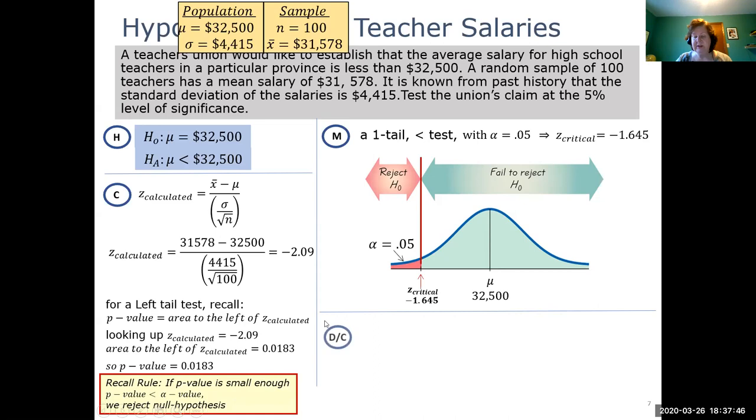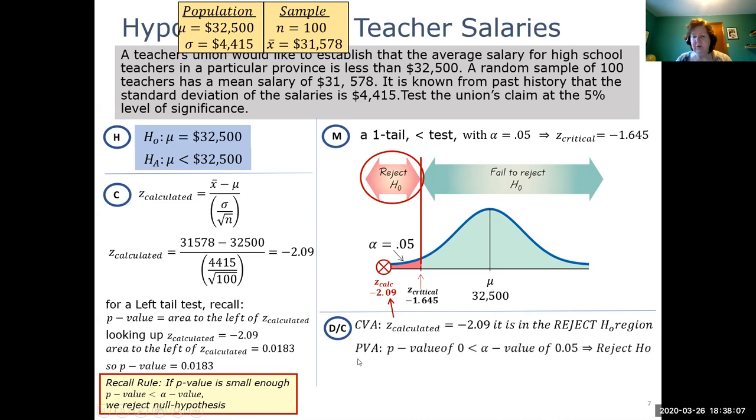Let's go over to our decision and conclusion phase. Our critical value approach: our Z calculated is negative 2.09. It's definitely going to be over here somewhere, so we're in the reject region. I've sort of made it exaggerated a bit, but we're in the reject region. We then have our p-value approach. Our p-value of 0.0183 is, for all intents and purposes, almost zero. And that is indeed less than our alpha of 0.05. So we can reject H0.